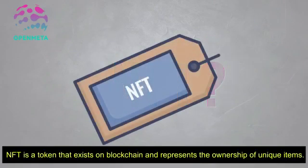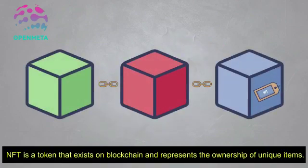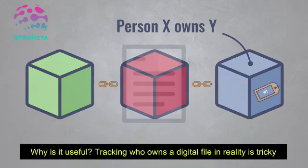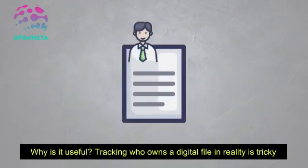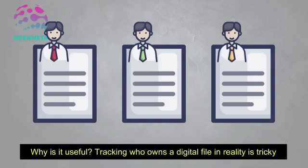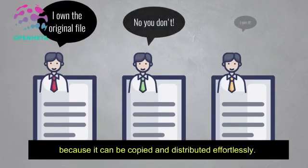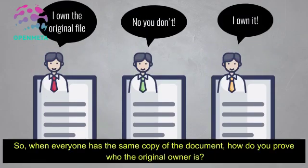NFT is a token that exists on the blockchain and represents the ownership of unique items. Why is it useful? Tracking who owns a digital file in reality is tricky because it can be copied and distributed effortlessly. So when everyone has the same copy of a document, how do you prove who the original owner is?